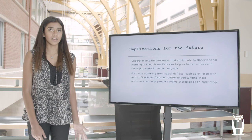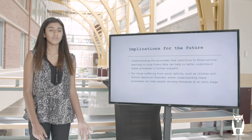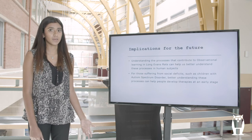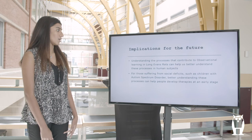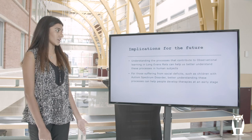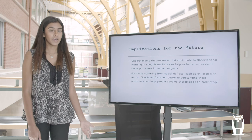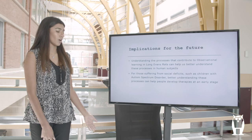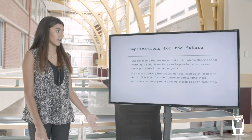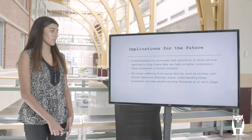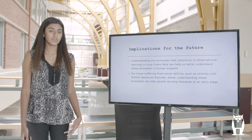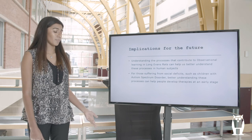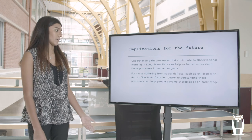These were only three variables I decided to study that contribute to observational learning, but there are plenty of other processes I didn't examine that I hope to examine in my next couple of years at UConn. Also, the process of observational learning isn't specific to animals — it happens in humans as well. In the future we hope to apply our learning about observational learning in rats to human subjects, particularly for humans suffering from autism spectrum disorder who experience social deficits and learning difficulties at a young age, to help develop therapies to implement at an early stage.